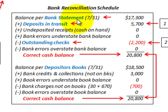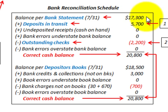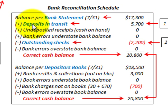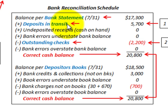Let's look at the balance per the bank statement. In this case, it's July 31, end of the month. The bank statement says the company has $17,300. What we have to do is add some deposits. If you're going to reconcile this bank statement, you have to include deposits in transit, which in this case we're going to determine to be $5,700.